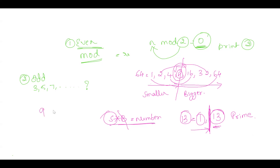For example, take the odd number 9 — its factors are 1, 3, and 9. The square root of 9 is 3, so when I iterate from 1 up to the square root, I find another number, 3, apart from the number itself. This means it is not a prime number. So iterating up to the square root helps us distinguish between prime and non-prime cases.